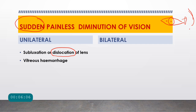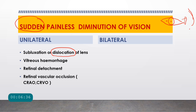Another cause of unilateral sudden painless diminution of vision is vitreous hemorrhage, which is usually not associated with pain especially when not trauma-related. In the retina, retinal detachment — separation of the neurosensory retina from the retinal pigment epithelium — causes sudden painless loss. Retinal vascular occlusions such as central retinal artery occlusion and central retinal vein occlusion also cause sudden painless vision loss. Exudative (wet) ARMD with choroidal neovascular membrane can bleed into the vitreous and retina, causing sudden painless diminution in one eye.